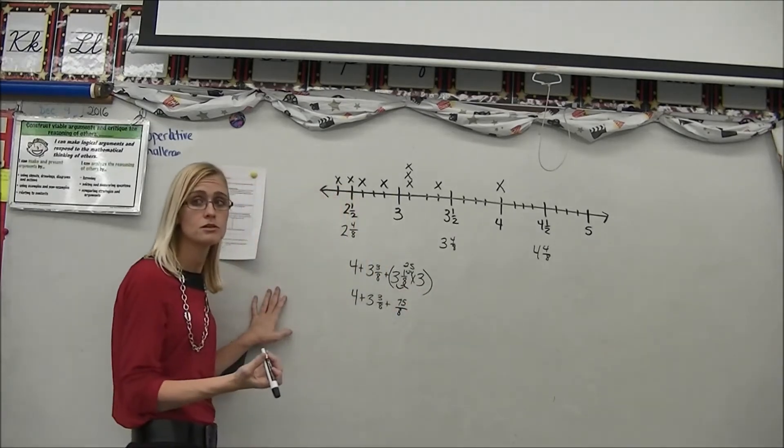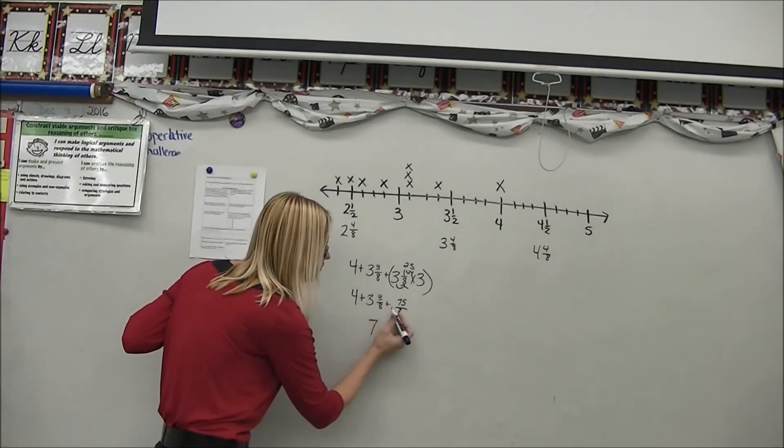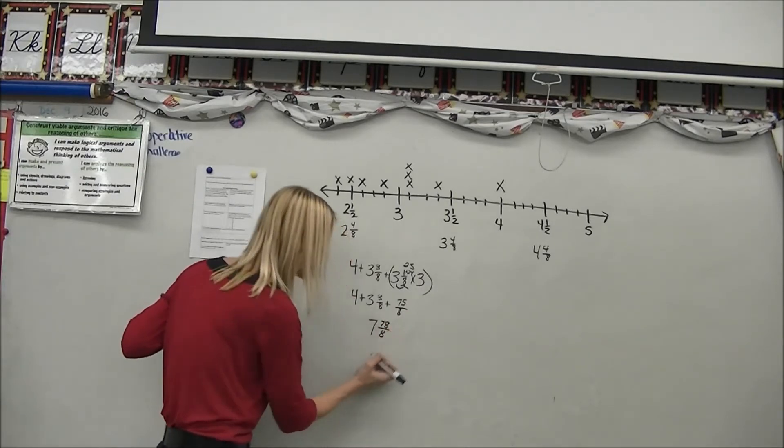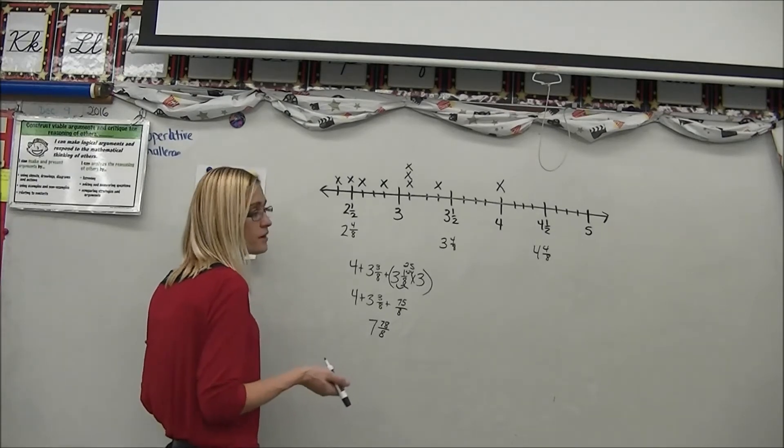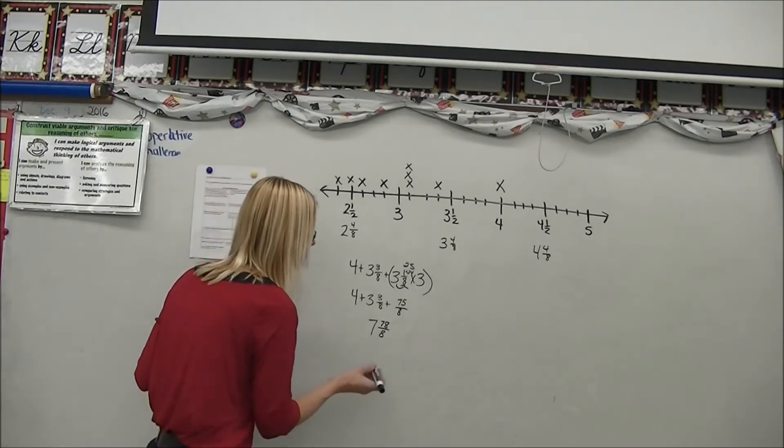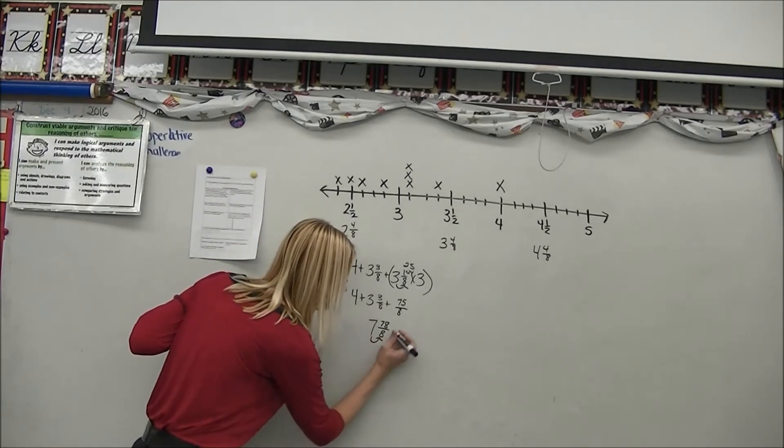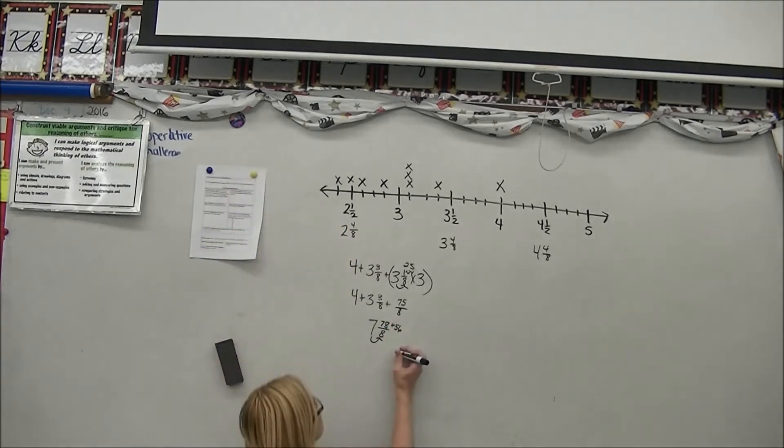And now the next step that I'm going to do is I'm just going to add it up. 3 plus 4 is 7. And 75 plus 3 is 78 eighths. Now once again I need to figure out the average which means I'm going to be dividing. And in order to divide I want to have this as an improper fraction. So 7 times 8 is 56. So I'm joining 78 and 56 which 8 plus 6 is 14. Carry my 1 is 13. So 134 eighths.